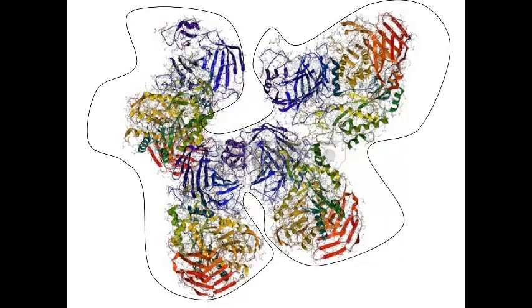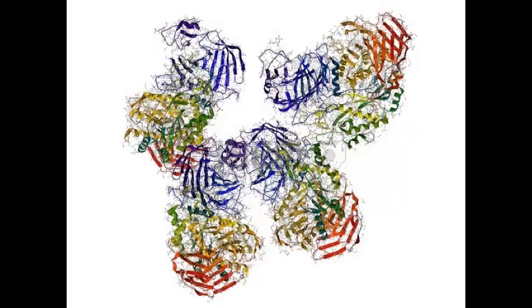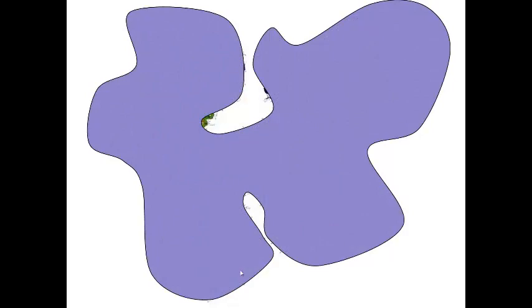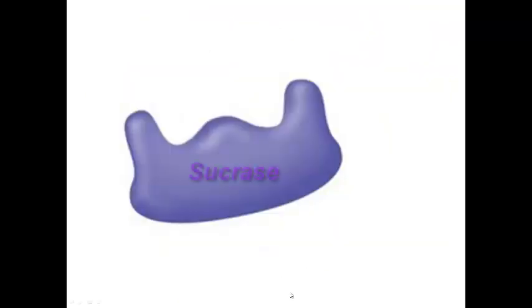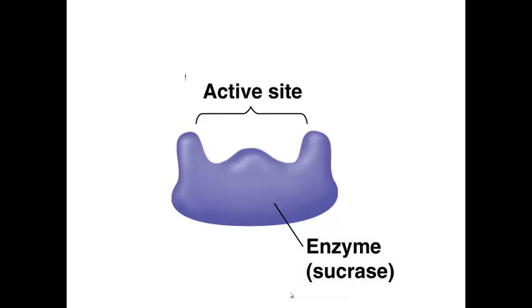Let's symbolize the enzyme more simply by illustrating the three-dimensional shape as a globular structure. We will use sucrase as an example for how enzymes work. As a result of its shape, the enzyme has what's called an active site. This is where the enzyme interacts with the substrate, the reactant. For this particular enzyme, it's going to be sucrose, which is table sugar.